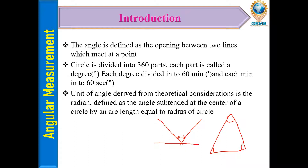A circle is divided into 360 parts; each part is called a degree. Each degree is divided into 60 minutes, and each minute is divided into 60 seconds.